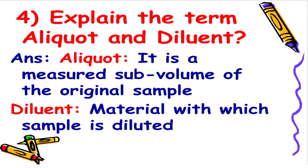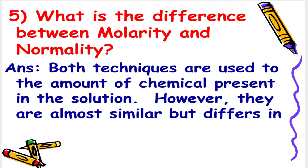Next: Explain the terms aliquot and diluent. The answer is an aliquot is a measured sub-volume of the original sample. On the other hand, diluent is the material with which the sample is diluted.